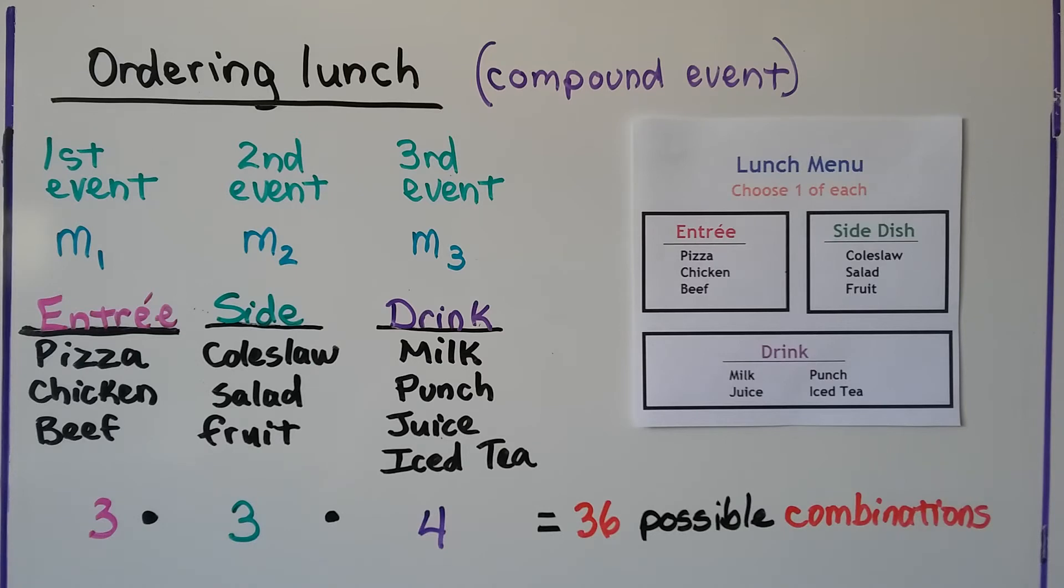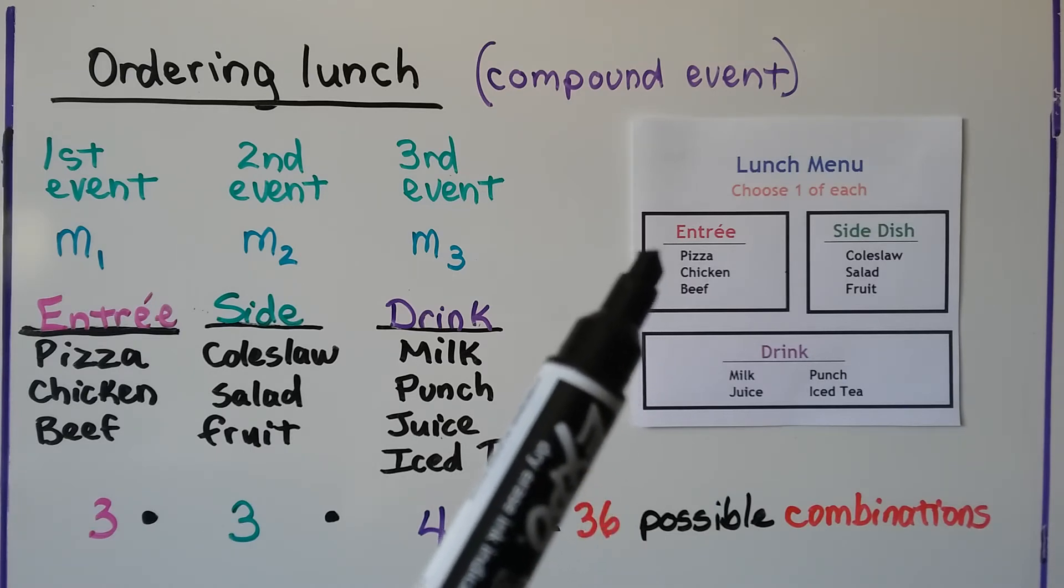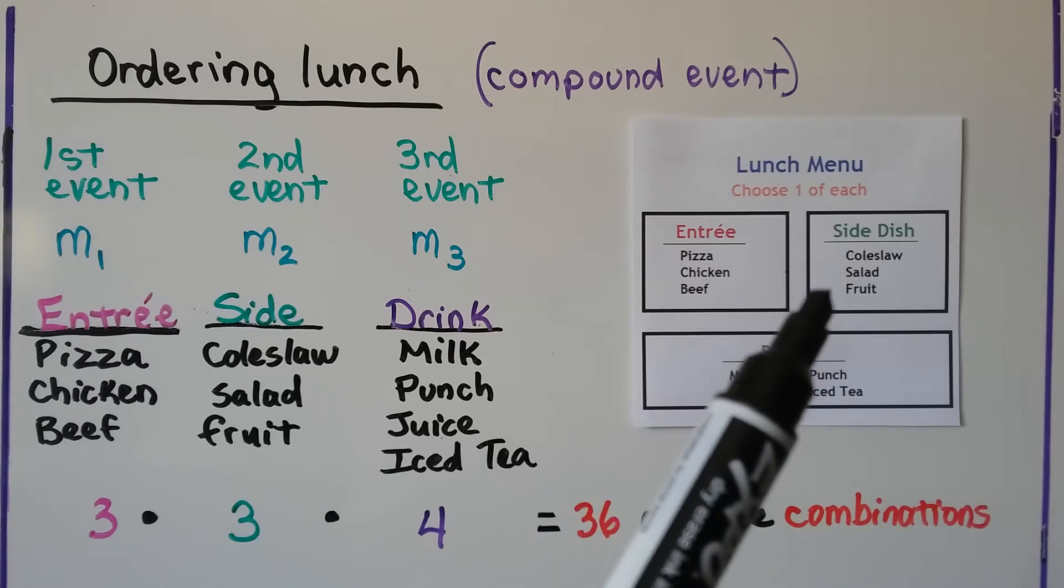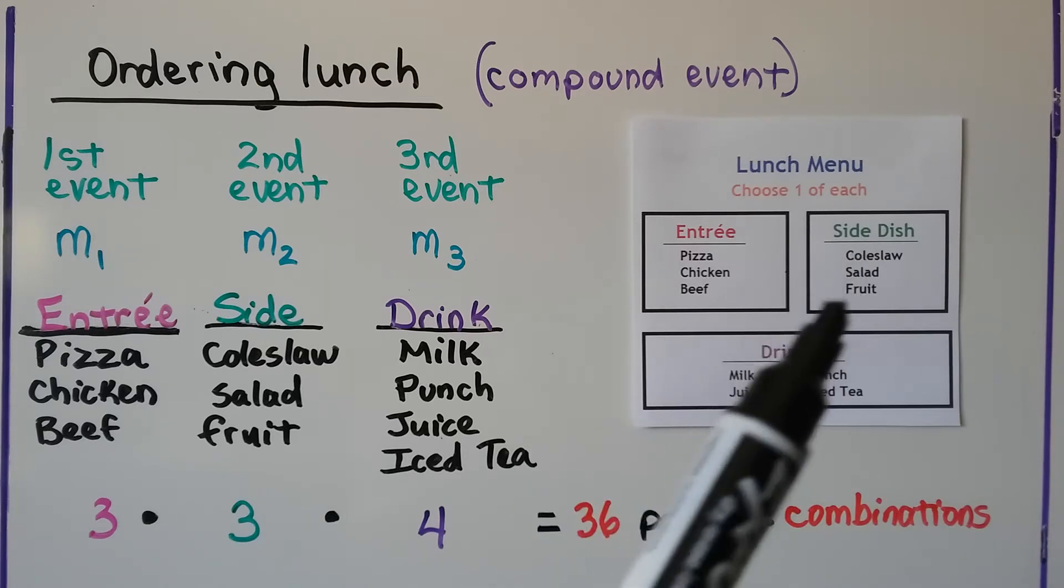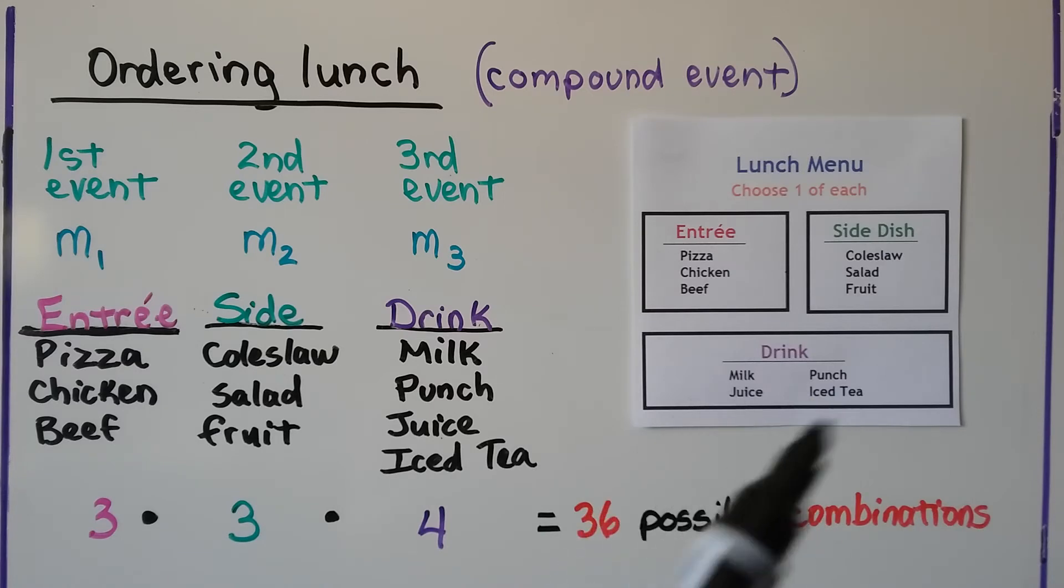We can even do it to find the possible combinations on a lunch menu. So here's the lunch menu. It says to choose one of each. We have three entrees: pizza, chicken, or beef. There's three possible side dishes: coleslaw, salad, or fruit. And we have four possible drinks: milk, punch, juice, or iced tea.